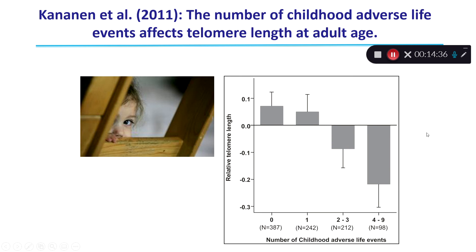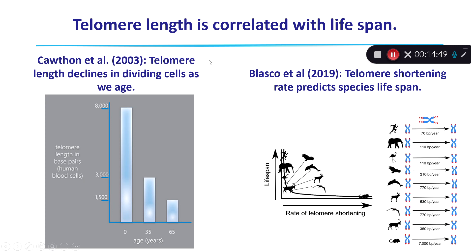This means extreme stress in early childhood can shorten your telomeres prematurely. You might wonder why that matters — other scientists have shown that telomere length is correlated with lifespan. Cawthorn et al. in 2003 showed that telomere length declines in dividing cells as you age. They looked at leukocytes, or white blood cells, and found that every single time the cells divided, the genome got shorter. When a child is born, their telomere length is about 8,000 base pairs; a 35-year-old adult has about 3,000 base pairs; and a 65-year-old has only about 1,500 base pairs.